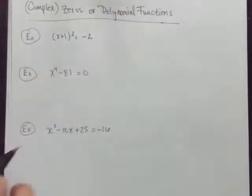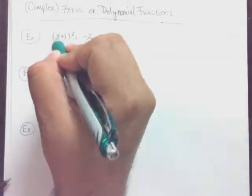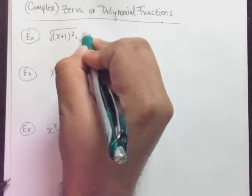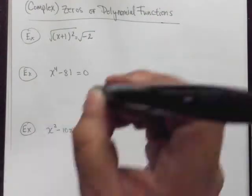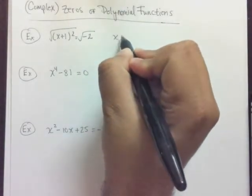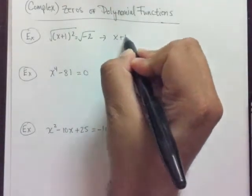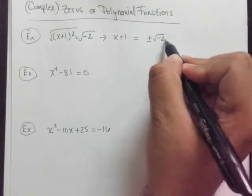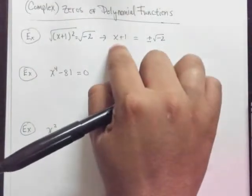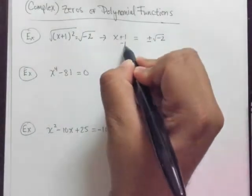Okay, so in this case, we're going to apply the square root property to get rid of the square. In doing so, we end up with something that looks like this: x plus 1 equals plus and minus the square root of this negative 2. Now we want to isolate the x, and we're going to subtract 1.